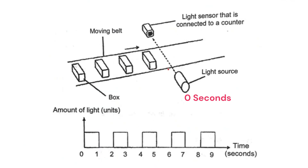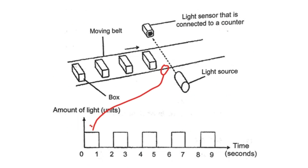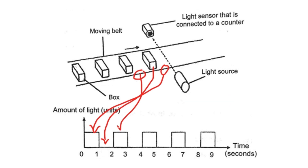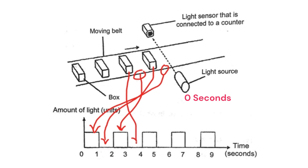During 0 to 1 second, there was no box, so the full amount of light can be detected by the sensor. Whenever there is a box between the light source and the sensor, no amount of light was being detected by the light sensor. In 9 seconds, there were 4 intervals with no amount of light being detected. So, 4 boxes pass the light sensor in 9 seconds.